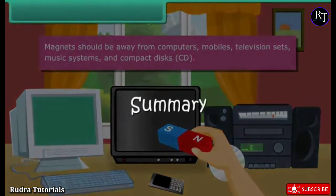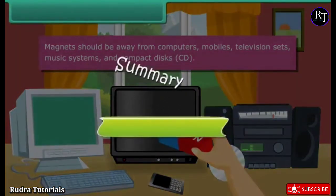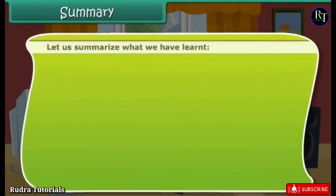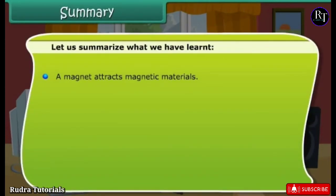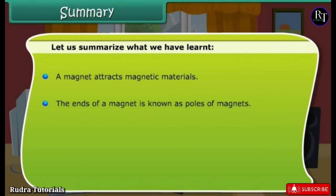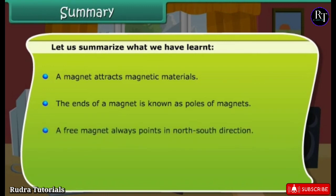Summary — let us summarize what we have learned. A magnet attracts magnetic materials. The ends of a magnet are known as poles. A free magnet always points in the north-south direction.